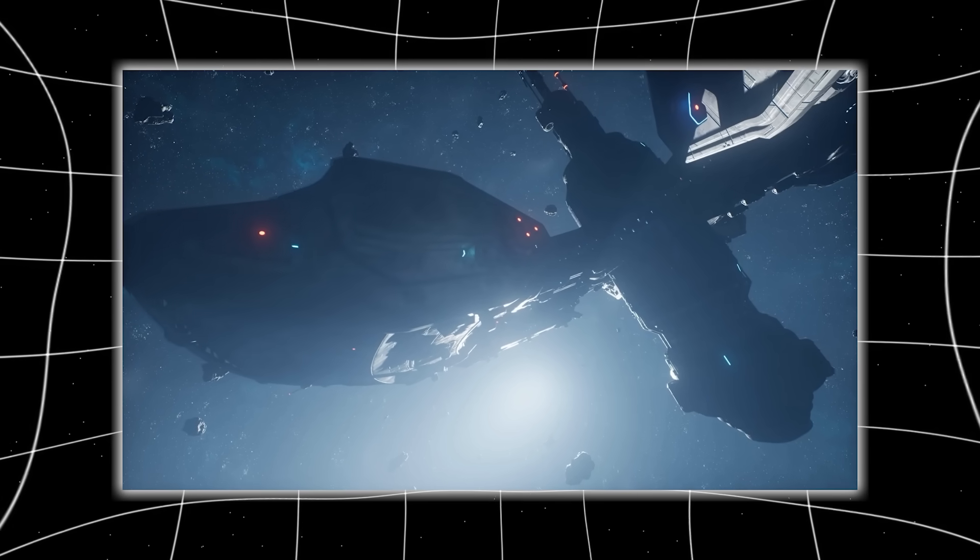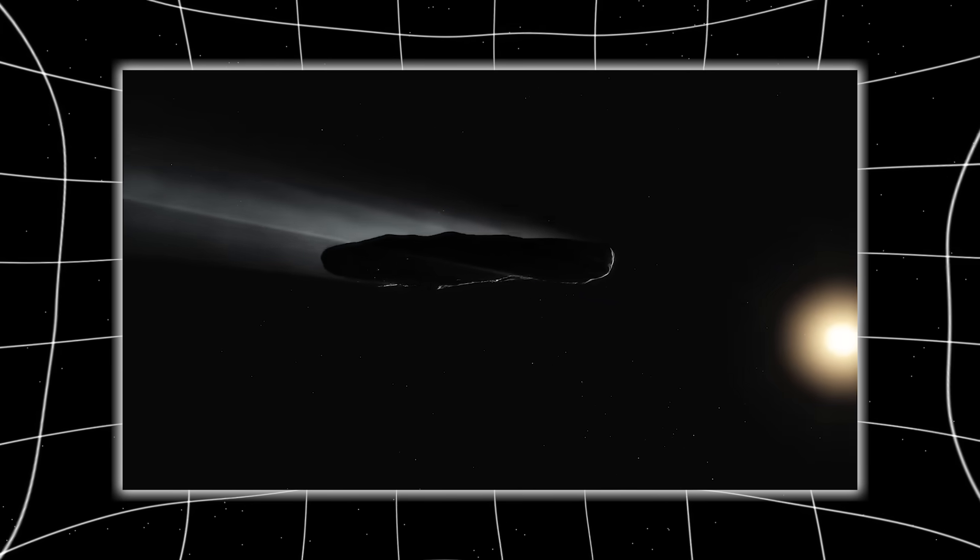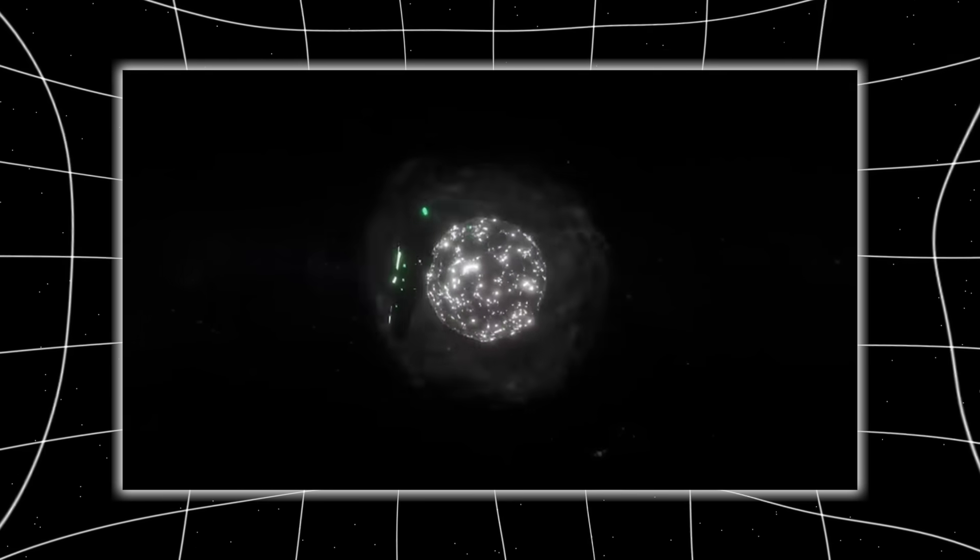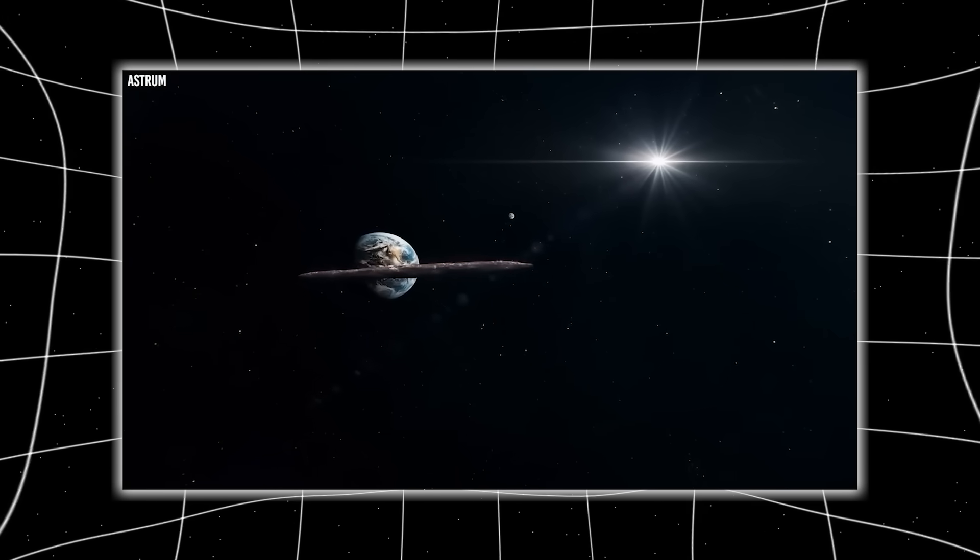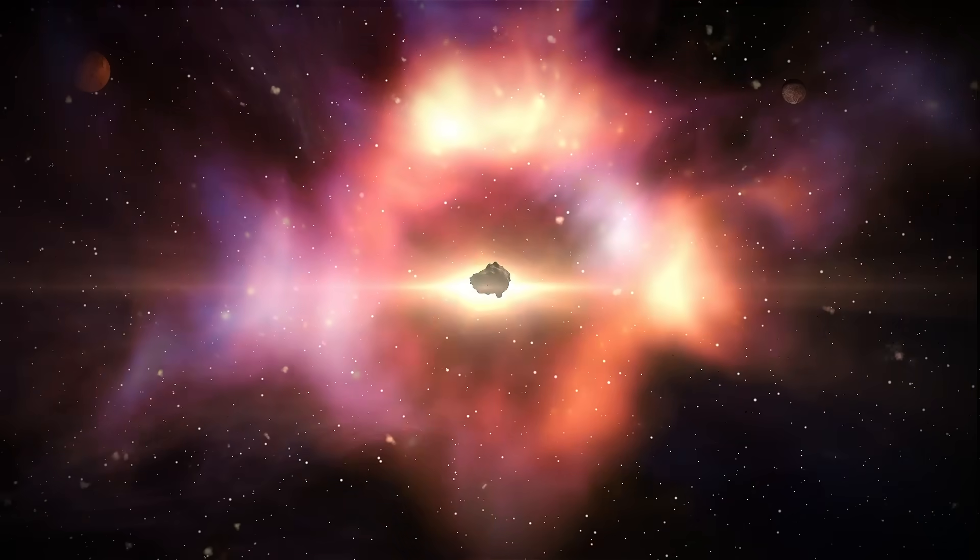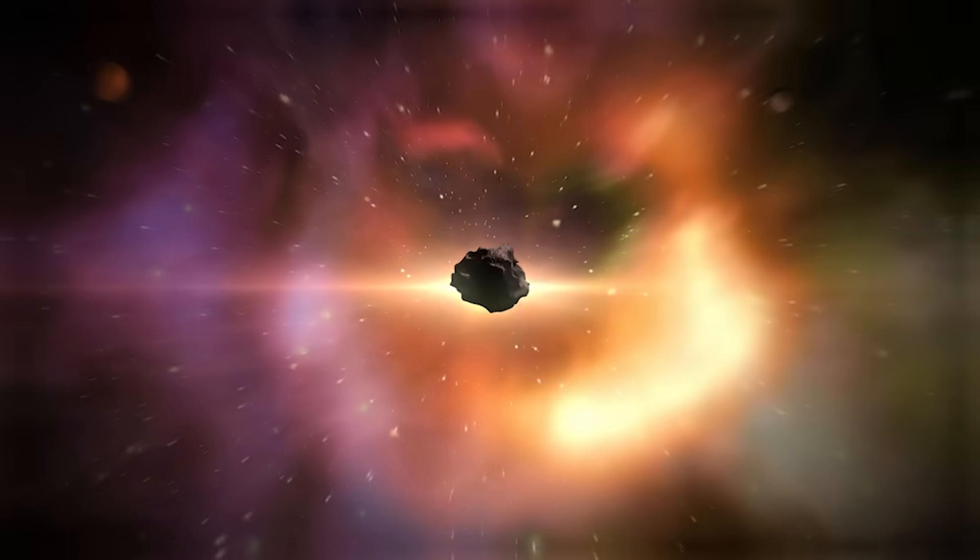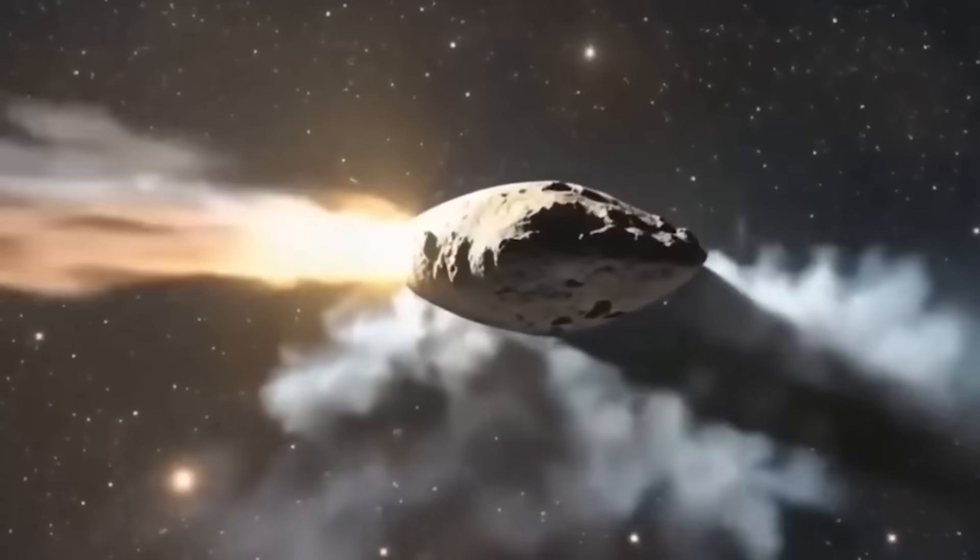Because if 3i Atlas truly was a machine, or a vessel, or a probe, then it didn't come here to dazzle us with brightness, or to behave like a comet pretending to be a comet for just long enough to study us. It came here to observe. To measure. To test the boundary between what we know and what we still can't admit we've seen. And when it was finished, it left with the cold precision of something that has done this before, somewhere else, to someone else.